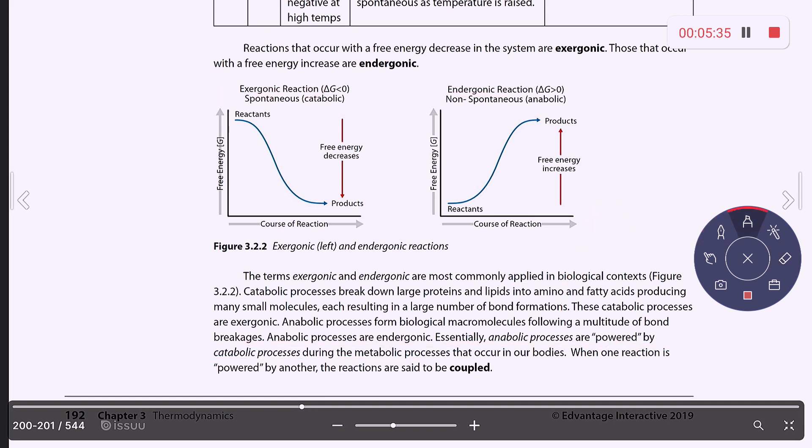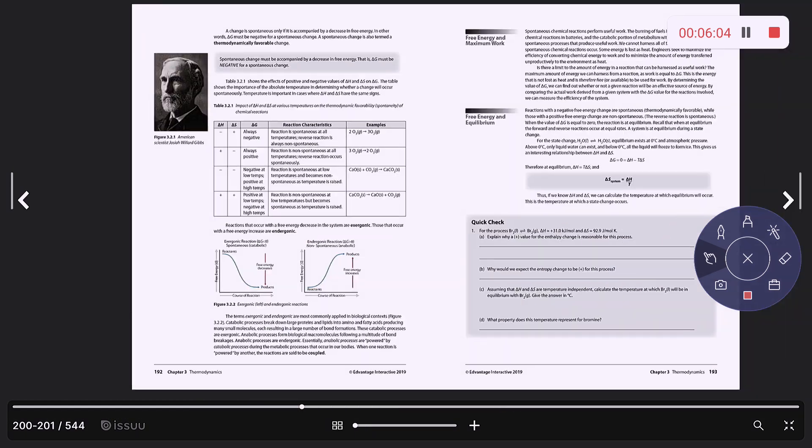So here is my negative delta G spontaneous process. You can see that the free energy is decreasing as the reactants are being converted into products. On the right-hand side for your endergonic reaction where your delta G is greater than zero, this is a non-spontaneous process where converting reactants to products results in an increase in free energy.